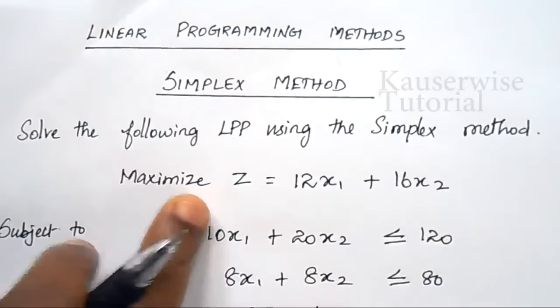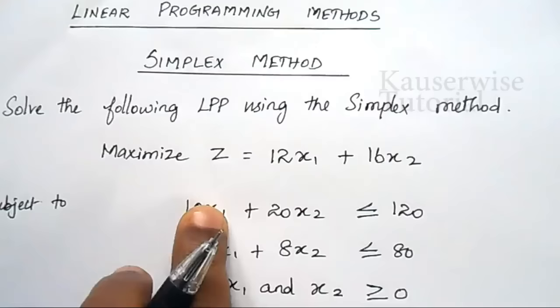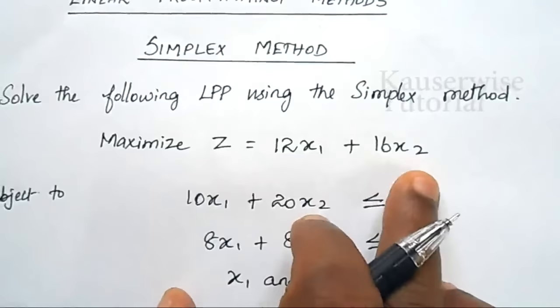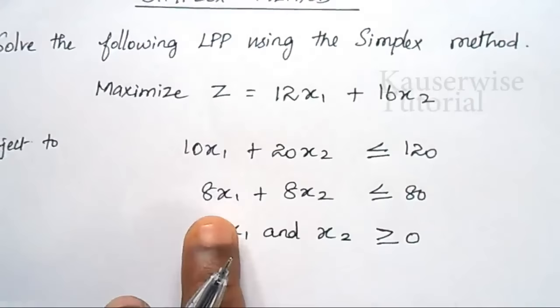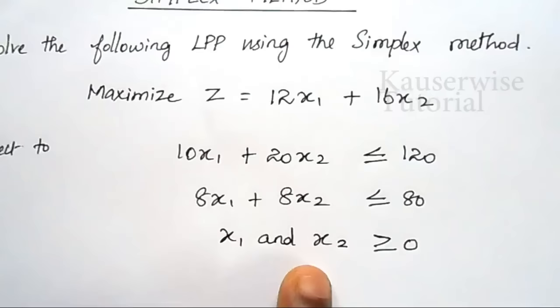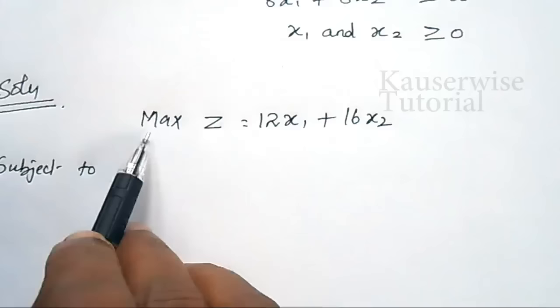See the problem. Solve the following LPP using the simplex method. This is a maximization problem. Maximize z equal to 12x1 plus 16x2, subject to 10x1 plus 20x2 less than or equal to 120, and 8x1 plus 8x2 less than or equal to 80. x1 and x2 greater than or equal to 0. The objective function is z equal to 12x1 plus 16x2.